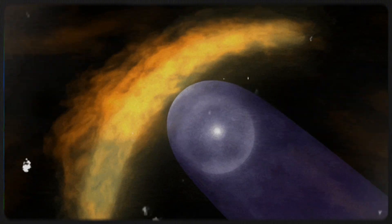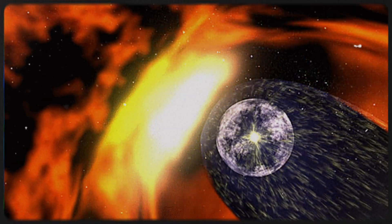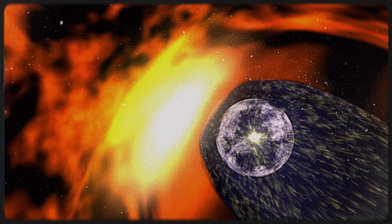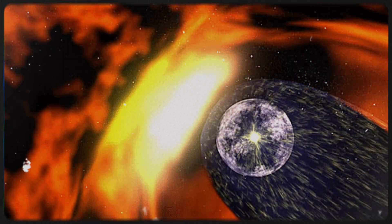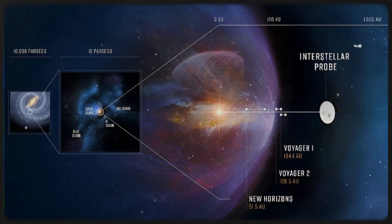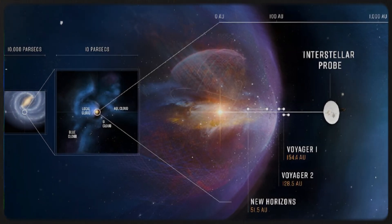Voyager 1, which is the most distant human-made object from Earth, crossed into interstellar space in 2012, followed by Voyager 2 in 2018. These milestones mark humanity's first steps into the space between the stars.